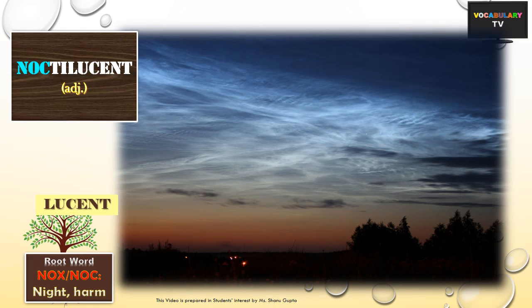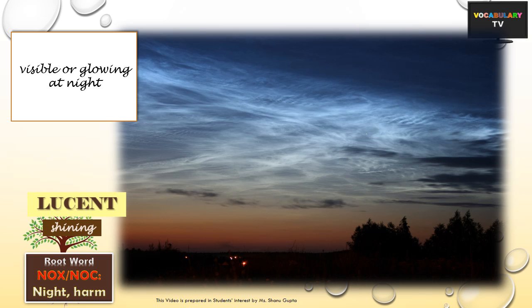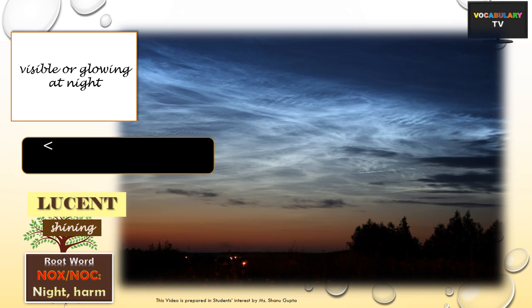Next we have the word Noctilucent. We have done word roots Luke and Lume earlier and they mean light. So combining the two roots Noct and Lucent, the word Noctilucent describes something that is visible or glowing at night. As you can see in this picture, in the night sky there are noctilucent clouds.